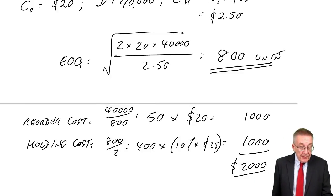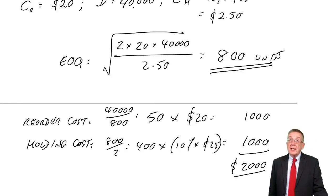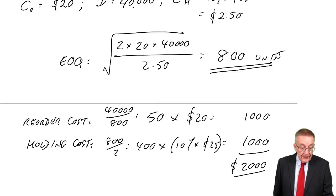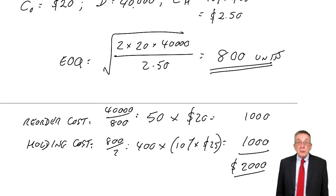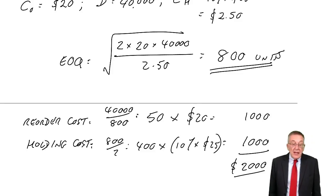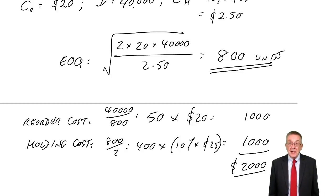If we order between zero up to 5,000 units, we get no discount. But if we're prepared to order from 5,000 and less than 10,000 each time, they'll give us a discount of 1% on the purchase price. And if we're prepared to order 10,000 or more each time, we'll get a 1.5% discount on the purchase price.